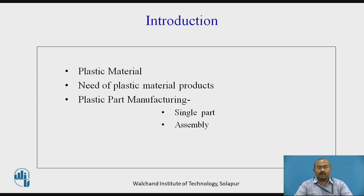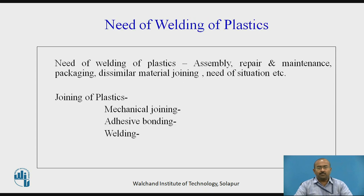Likewise, to take advantage of these properties for designing a product that will sustain in its respective working environment, plastic material is often used. Plastic parts can be manufactured as a singular element or combined together to form an assembly. In that case, let us see the need of welding of plastic. To assemble any number of plastic elements, we require to join them together, and that is by means of welding.